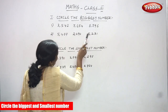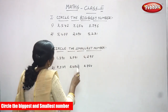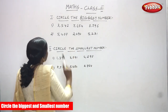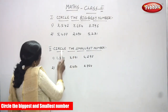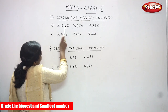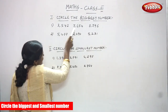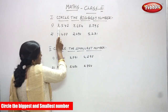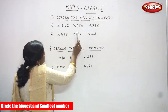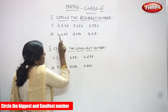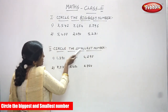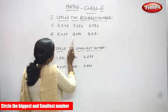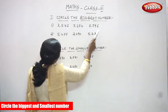You have to find out which is the biggest number, then draw a circle around that particular number. Each number has ones, tens, hundreds, and thousands places. These are all four-digit numbers, so first you have to concentrate on the thousands place.